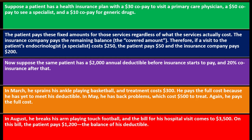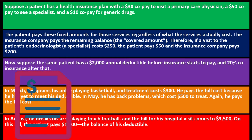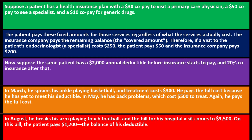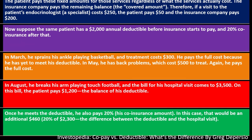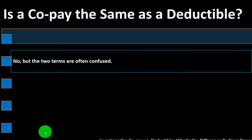In August he breaks his arm playing touch football and the hospital bill comes to $3,500. The patient pays $1,200, which is the balance of his deductible. After meeting the deductible he also pays 20% co-insurance on the remaining amount — an additional $460, which is 20% of $2,300, the difference between the deductible amount already paid and the total hospital bill. So even after the deductible you still owe that 20% co-insurance.